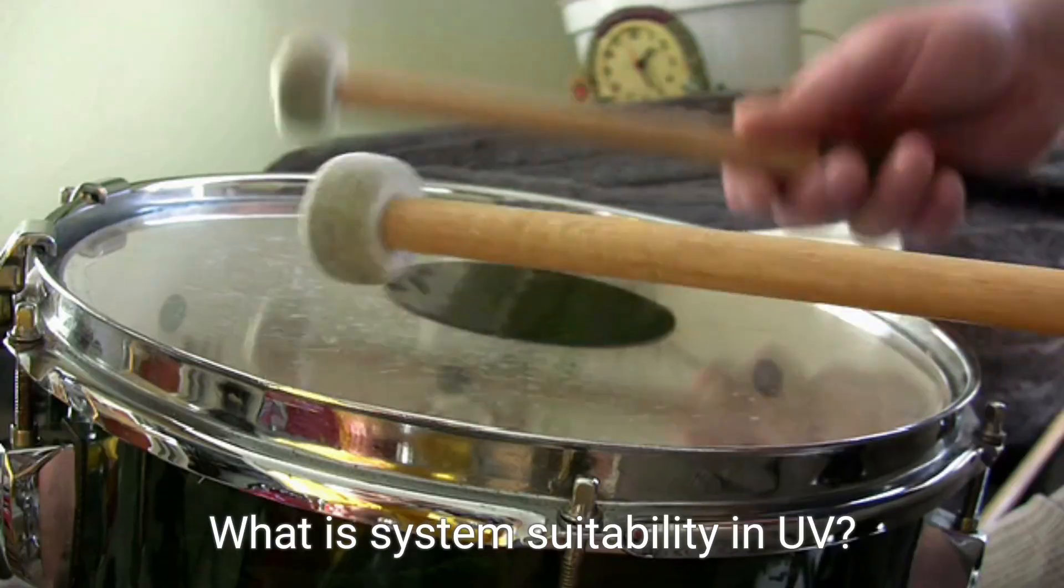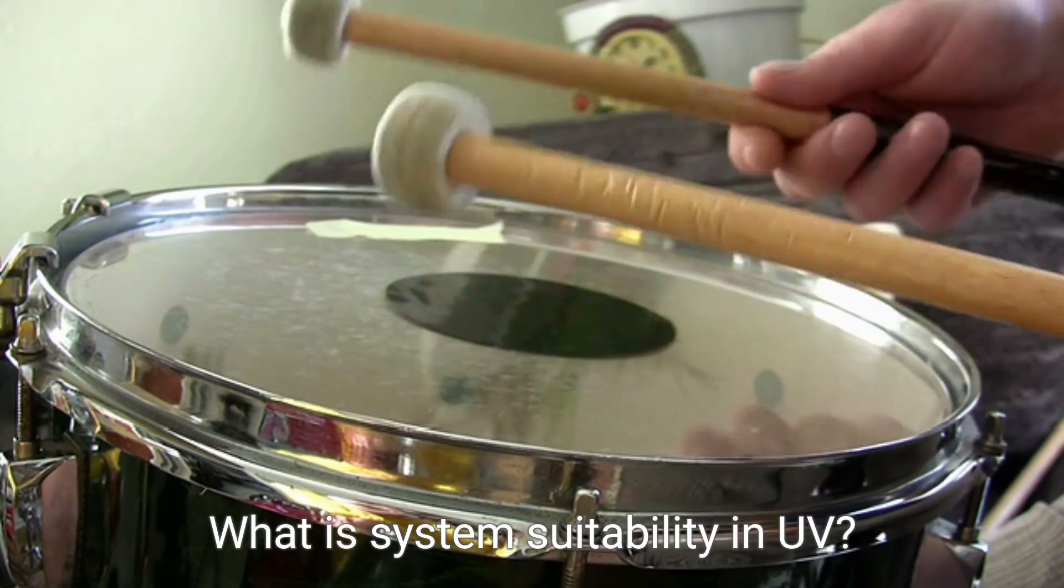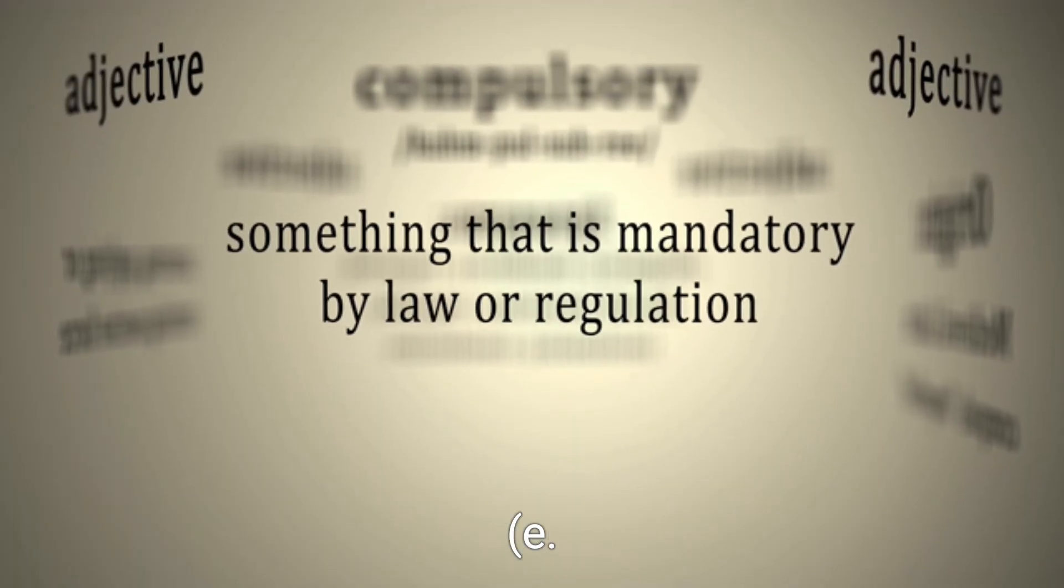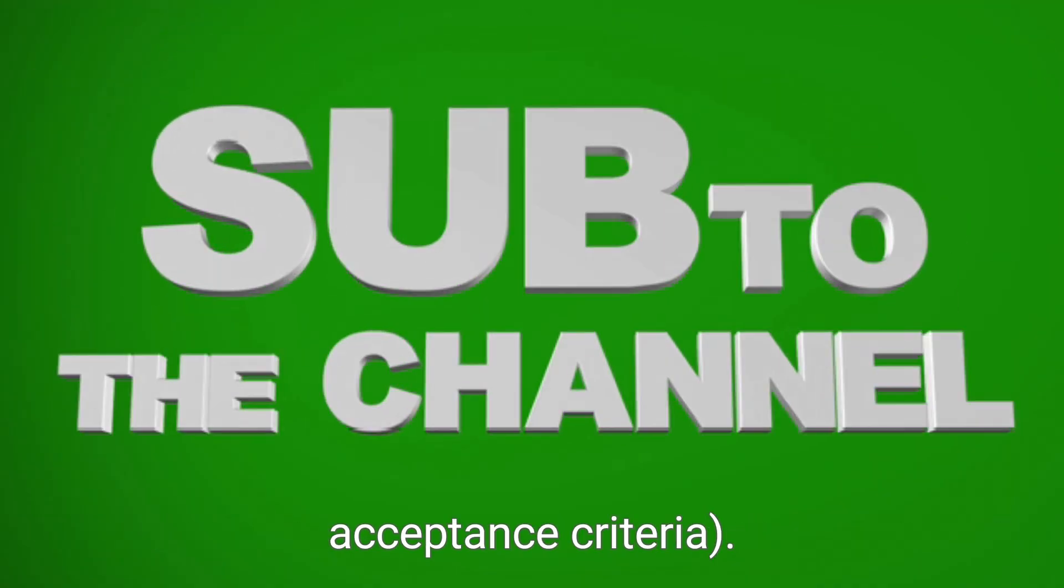What is system suitability in UV? It ensures the system's performance before analysis, e.g., checking absorbance of standard at lambda max within acceptance criteria.